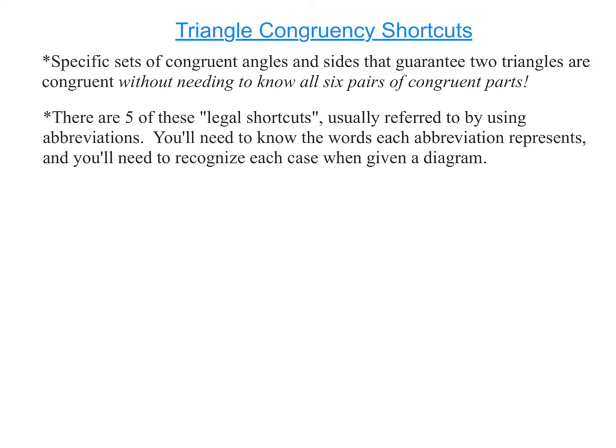In section 3.1, you learned that when two triangles were congruent, there were six pairs of parts that ended up being congruent as well, three pairs of sides and three pairs of angles.